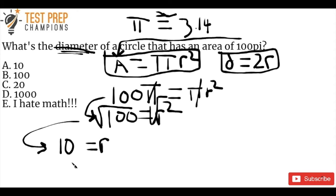So what's 10 times 2? 10 times 2 is 20. So therefore, we know that 20 equals the diameter of the circle, and that's answer C.